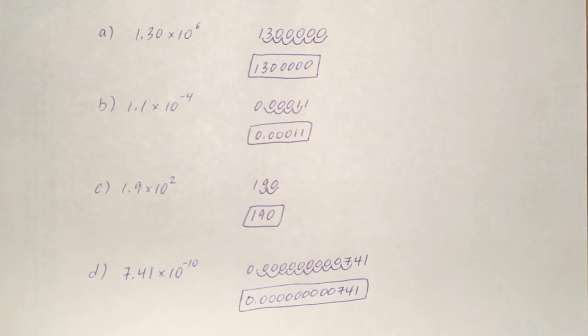and I've moved it one, two, three, four spaces to the left. And I've put zeros in all of those four spaces, put the decimal point where I ended, and then I boxed the answer. So 0.00011.